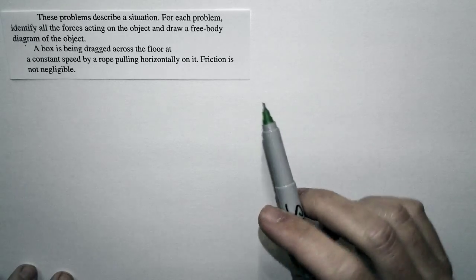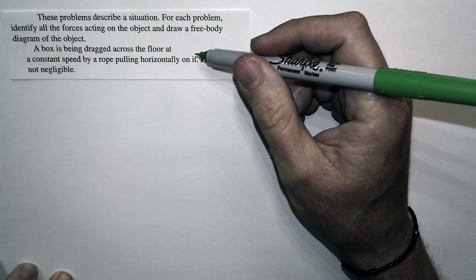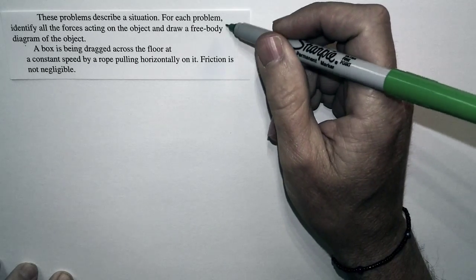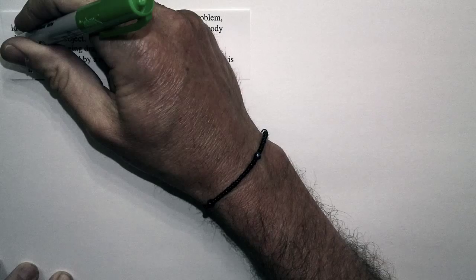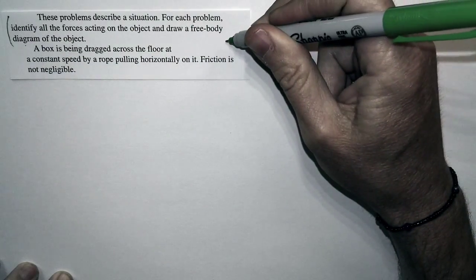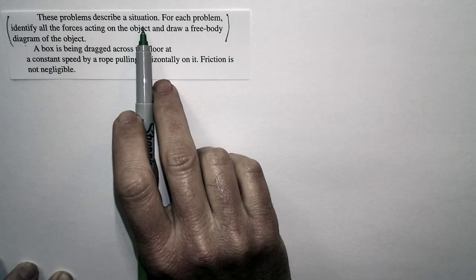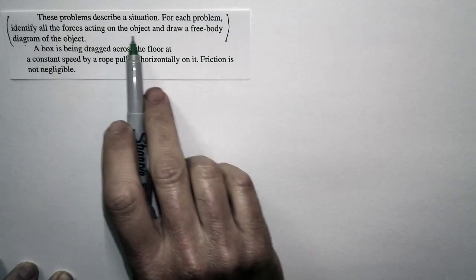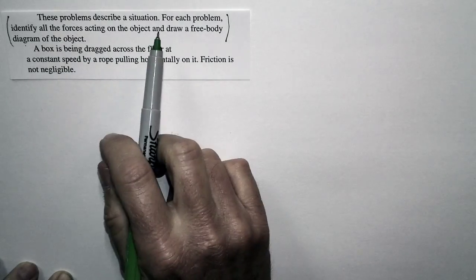In chapter 4, we're focusing on the most important aspects of solving Newton's laws and motion problems, and that is the consideration of the preparation. So this problem is part of a whole suite of problems which asks you to do this. You're going to look at the situation, and for each, identify the forces acting on the object and draw a free body diagram of the object.